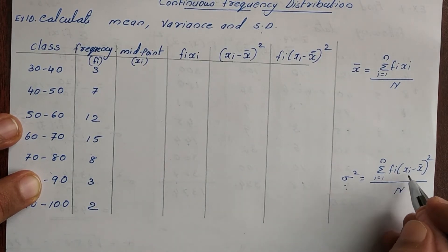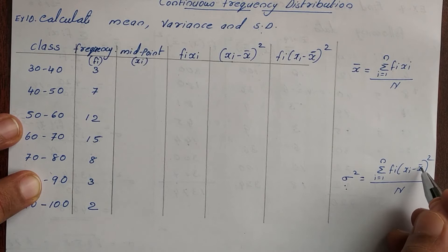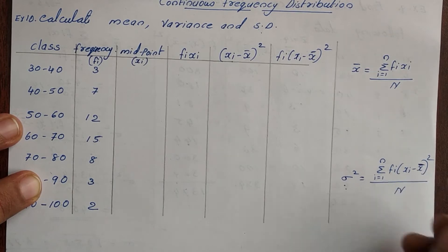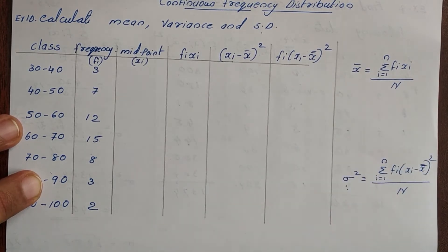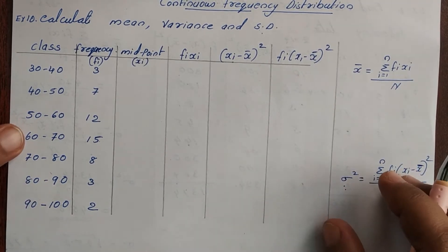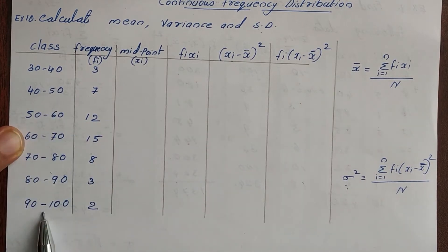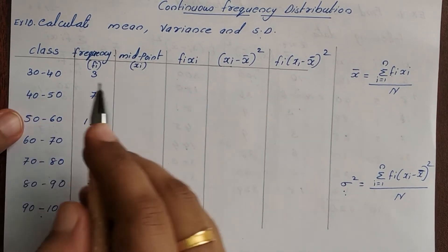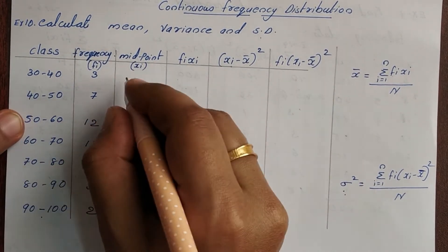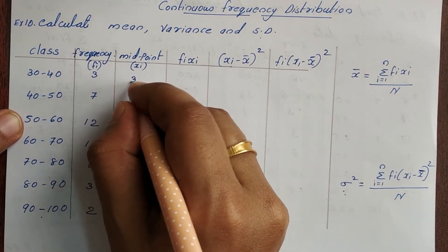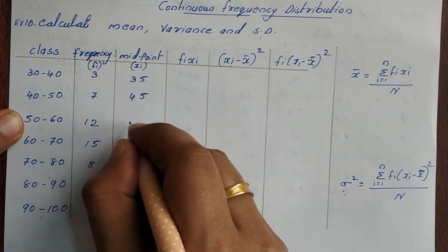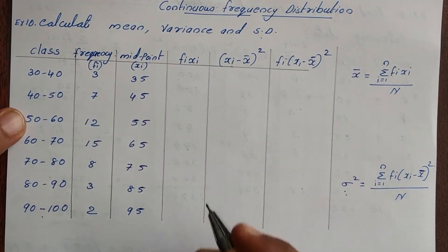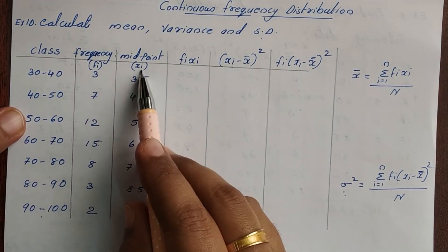Let's take a look at the equation. Let's look at x-bar, that is the mean. Let's take a look at the class midpoints.